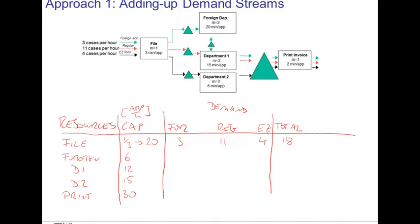At the foreign step, the situation is different because only the foreign units, 3 units per hour, are going to arrive at this department. There is no demand from the regular units and the easy units. In department one, we have the 3 units arriving from the foreign units, we have the 11 regular ones, but we don't have any ones from the easy. In department two, however, we have no foreign, no regular, just easy ones at a rate of 4 units per hour. Finally, everybody shows up at printing, and the total demand there is 3 plus 11 plus 4 equals 18.